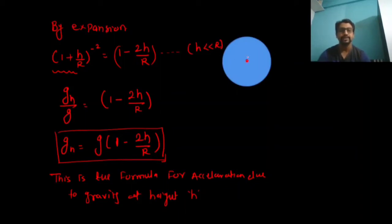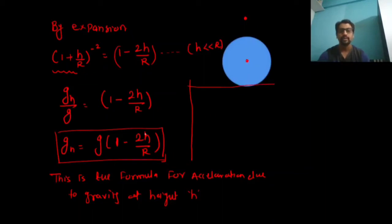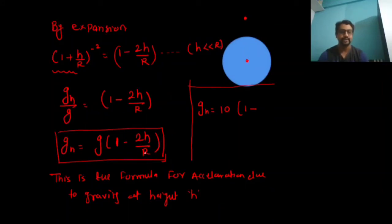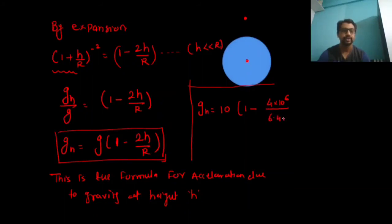Now if we look at this formula carefully, what can we say? If we increase the height of an object, does gravity increase or decrease? Let's take a small numerical example. Let g = 10 m/s². The radius of Earth R = 6400 km = 6.4 × 10⁶ m. Suppose we take the height h = 4000 km = 4 × 10⁶ m. Then 2h/R = 2 × 4 / 6.4, and 10⁶ cancels.